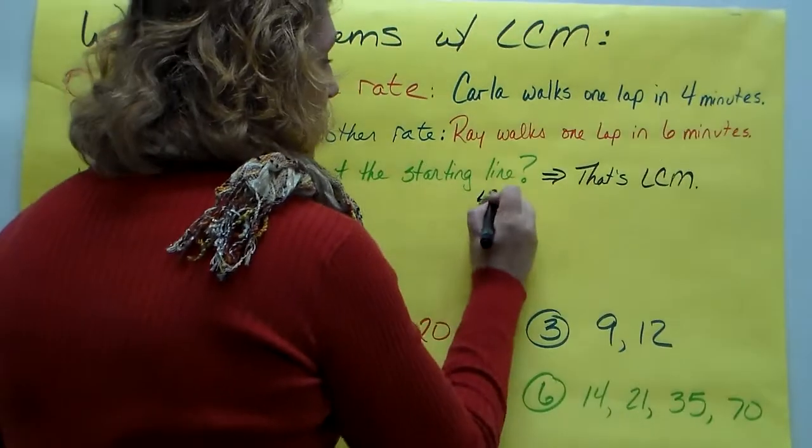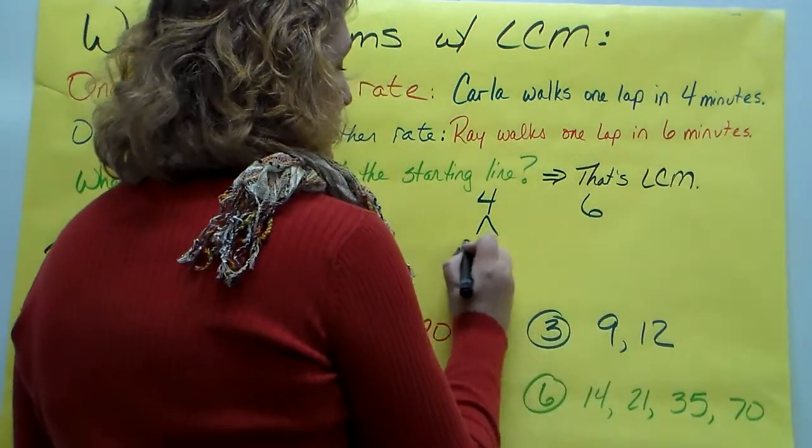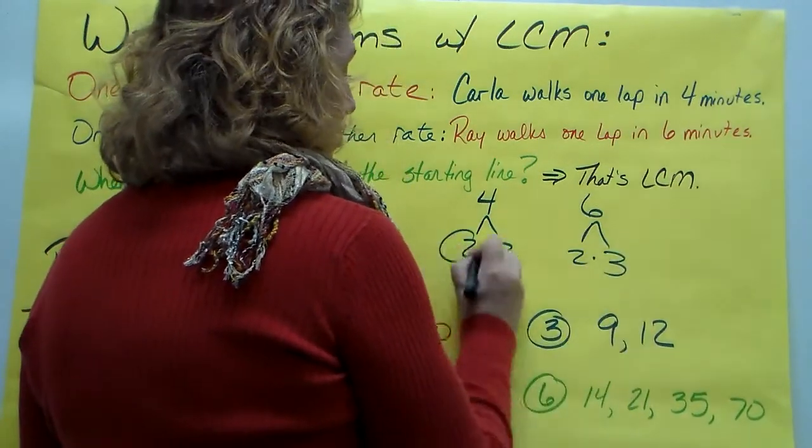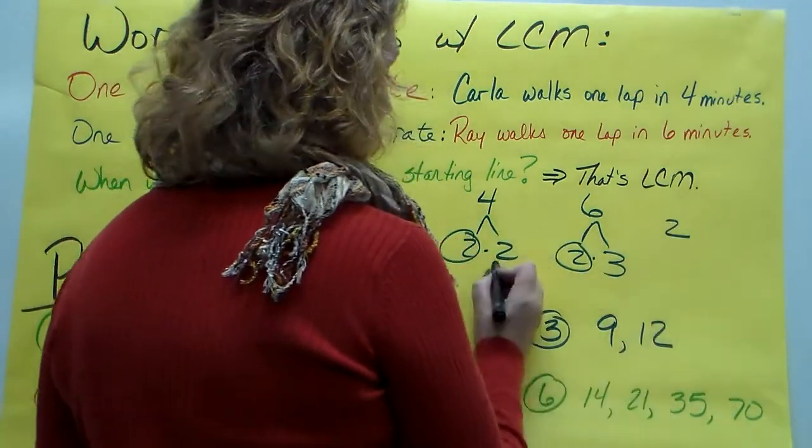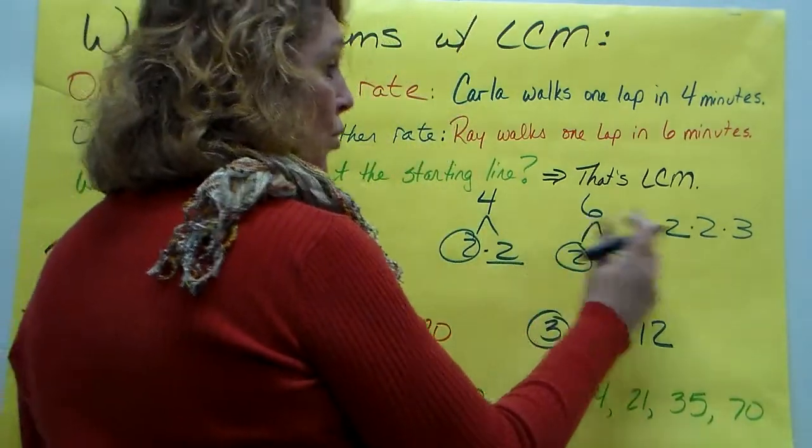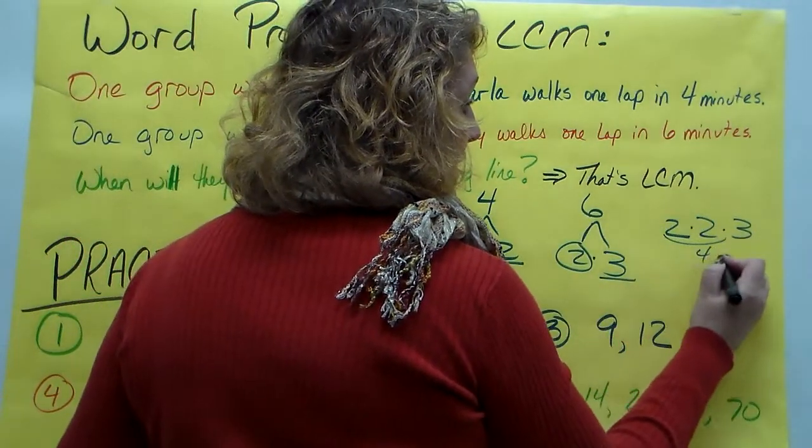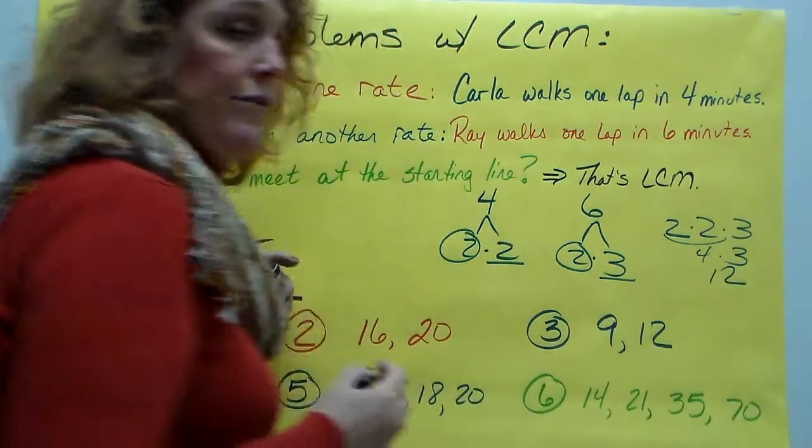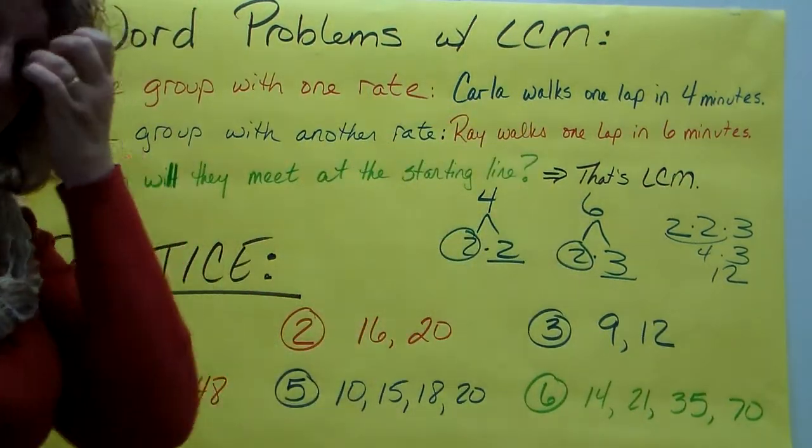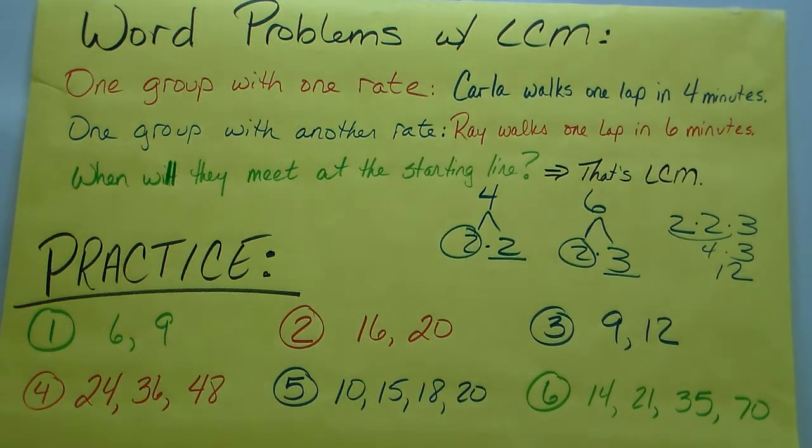So you're going to find the least common multiple of 4 and 6. So let's do that really quick. 4 and 6. 4 is 2 times 2. 6 is 2 times 3. So there's a 2 in common. We're going to write that down. And there's a 2. And there's a 3. So the least common multiple of 4 and 6 is 12. And that's the first time that 4 and 6 are going to meet each other.